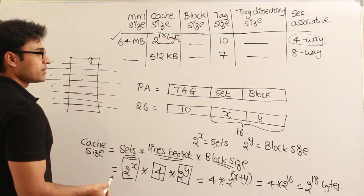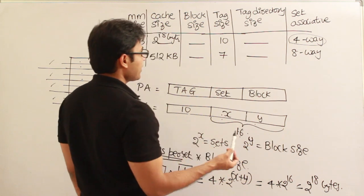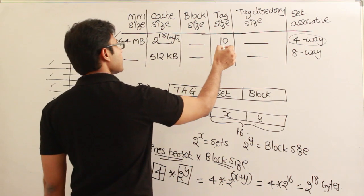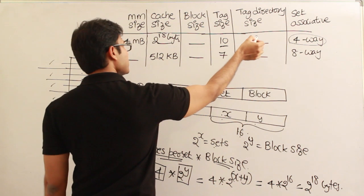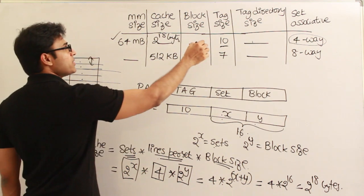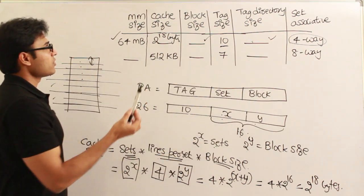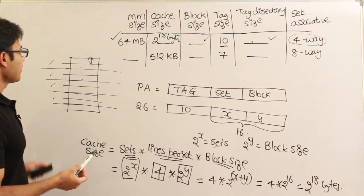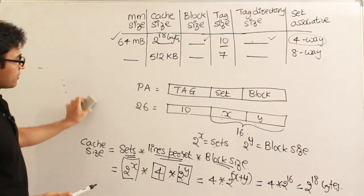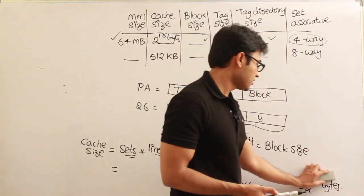However, we cannot individually determine the block size, since we only know X plus Y is 16. We also cannot determine the tag directory size independently, as we would need the block size for that. Now let's look at the next question, where cache size is given and we have to find the main memory size.